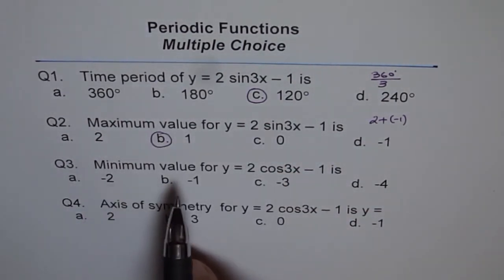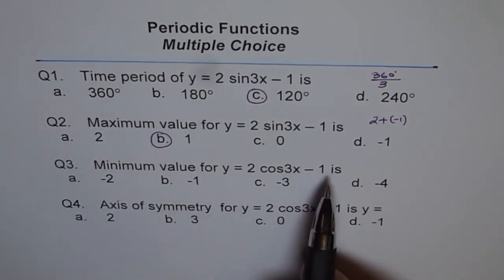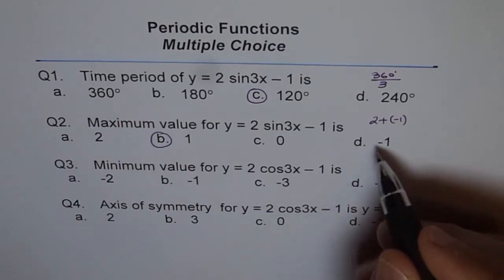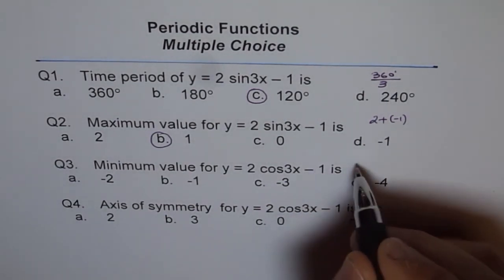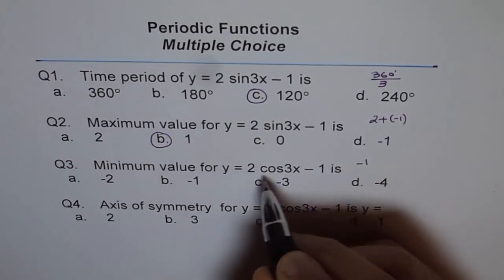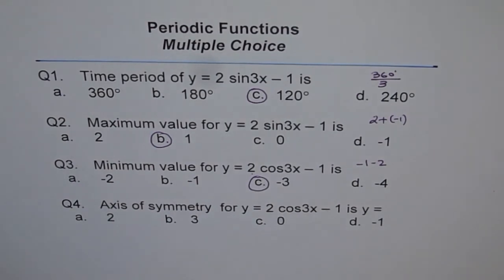Minimum value for y = 2 cos 3x − 1. It will go 2 units further down from −1, so it is −1 and −2, which is −3. That is the choice, C.